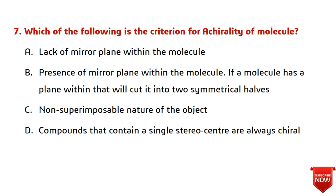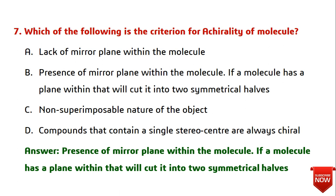Question seven: which of the following is the criterion for chirality of a molecule? The lack of a mirror plane within the molecule is not the answer. The presence of a mirror plane means the molecule can be cut into two symmetrical halves — that indicates achirality, not chirality. The non-superimposable nature option is also marked wrong here. Compounds containing a single stereocenter are not always chiral. The answer given is option B — presence of a mirror plane — as defining achirality.